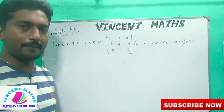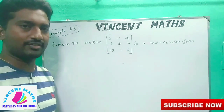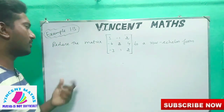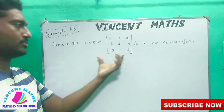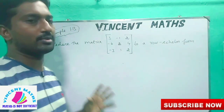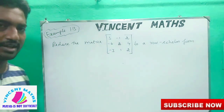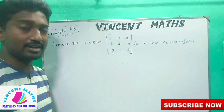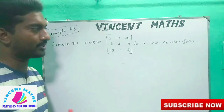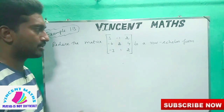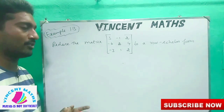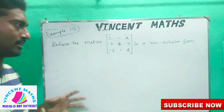Hi friends, this is Vincent. Max is not difficult. We will see Example 1.13 - that is, reduce the matrix. We will see a matrix in Row Echelon Form. There is an introduction video if you want to see Row Echelon Form first. We will see that. Ok friends, we will see this video.